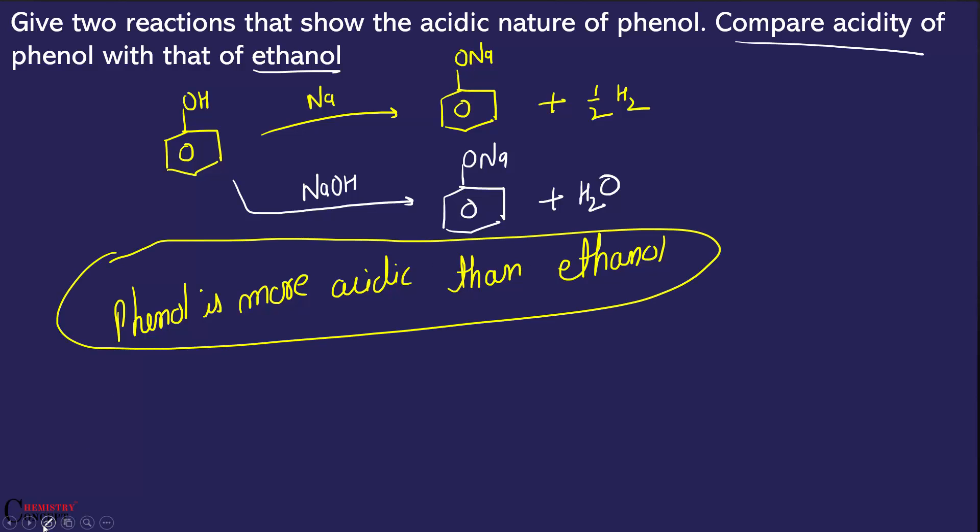Now if you ask what the reason is, the fact is that for phenol to behave as an acid, it has to donate a proton. And phenol after donating a proton forms phenoxide ion.